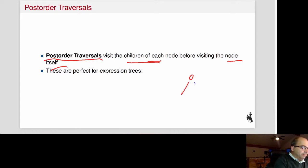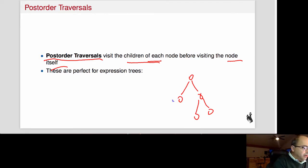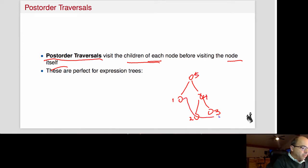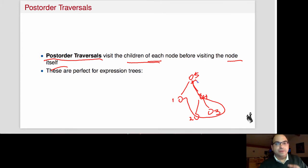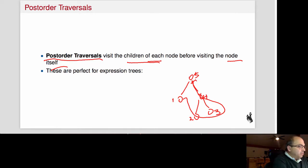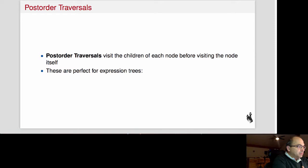For example, if I have a tree like this, I'm going to visit the children of the root first. I can't visit a node until I visit its children first. That is a post-order traversal — first visit the children, then visit the actual node.